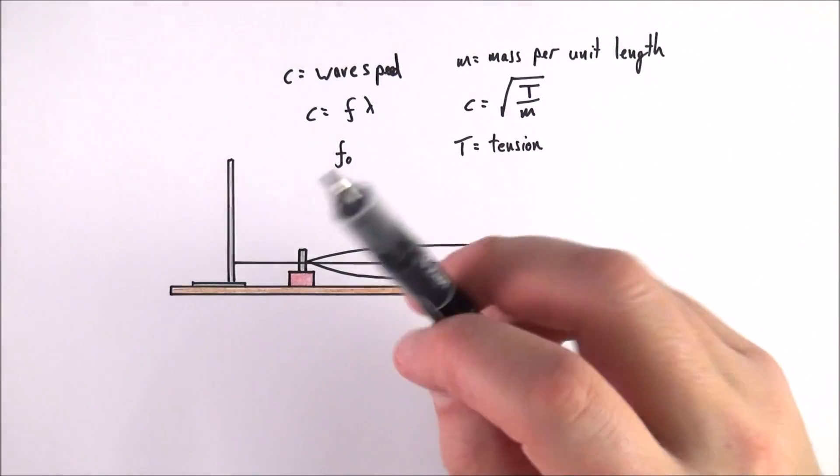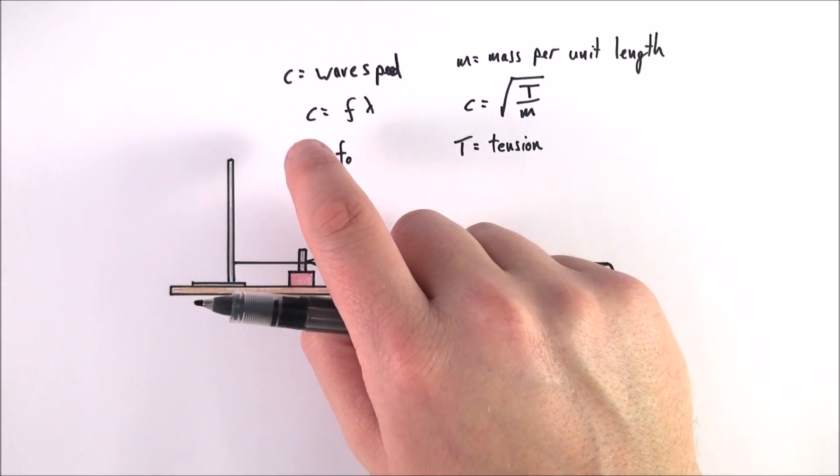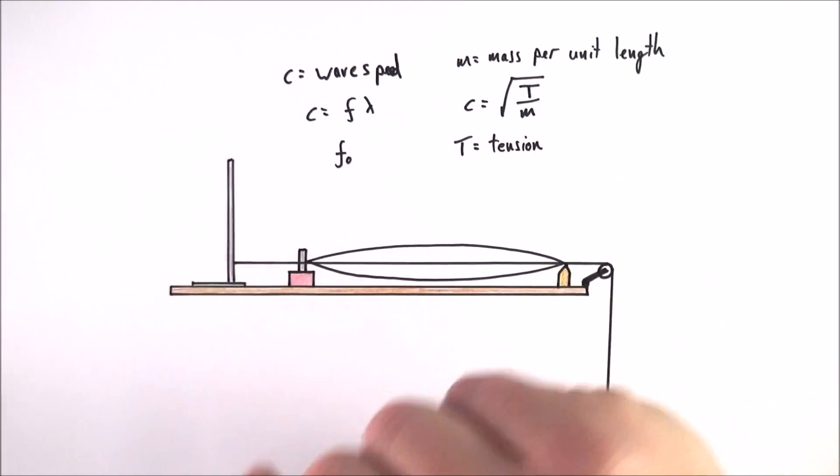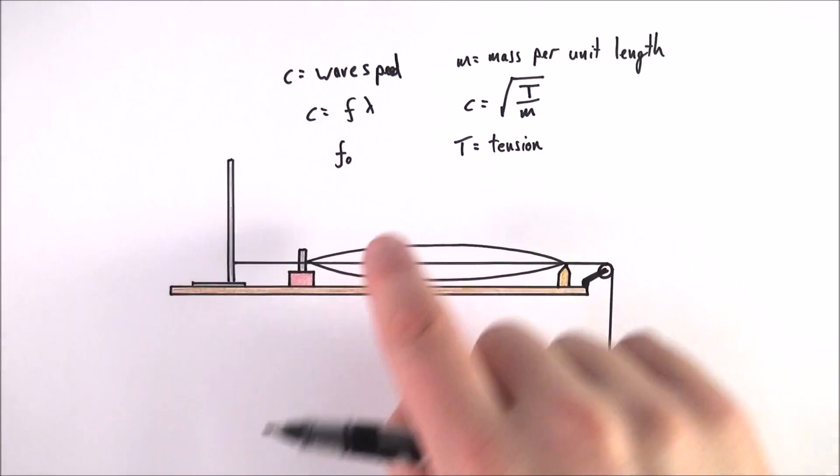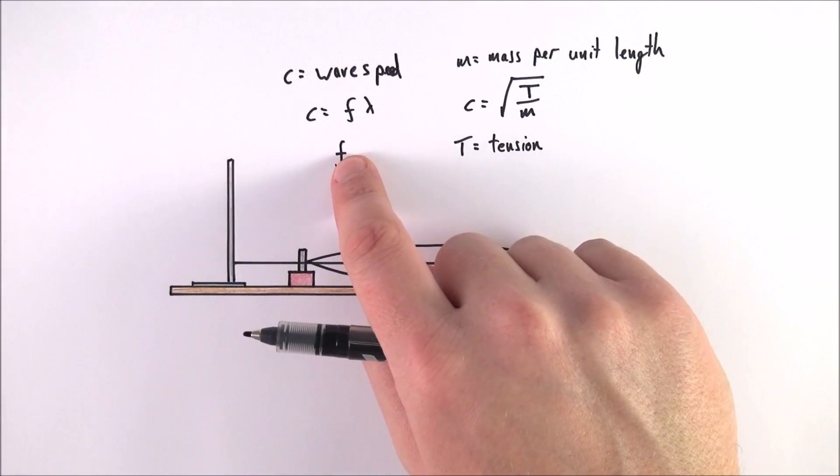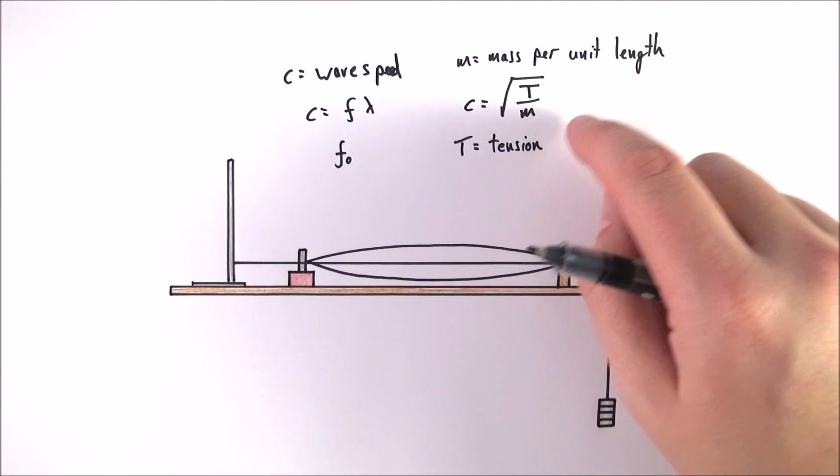Some of the theory that you need is that c stands for the wave speed. You should remember that c is equal to f lambda, so the wave speed is equal to the frequency times the wavelength. We're also going to be looking at this first harmonic where we have our fundamental frequency, which is f naught.